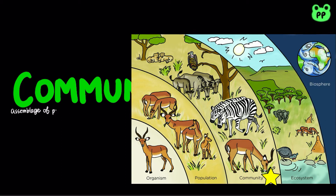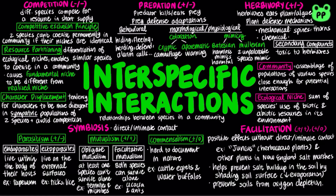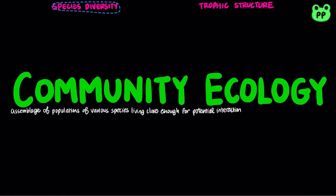A biological community is an assemblage of populations of various species living close enough for potential interaction. An important aspect of community ecology is interspecific interactions, which I've covered in my previous video. Other important aspects of community ecology include species diversity and trophic structure.